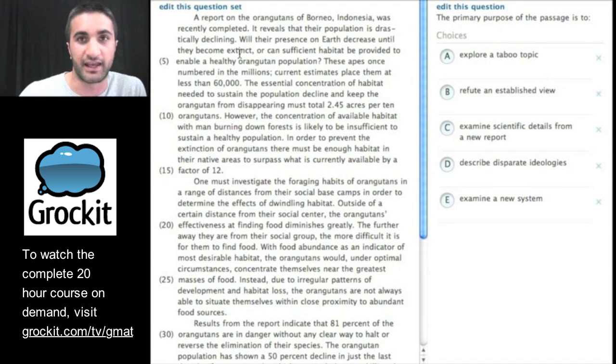So I just did it and I noticed that the first sentence was really short. Well, I know our rule of thumb is to just read the first and last sentence of the paragraph, but when the first sentence is that short, I'll usually read another sentence as well. I'm trying to get two or three lines in. So let's read the first sentence. A report on the orangutans of Borneo, Indonesia was recently completed. It reveals that their population is drastically declining. The last sentence of this paragraph says in order to prevent the extinction, there must be enough habitat in their native area.